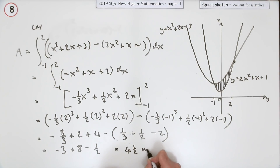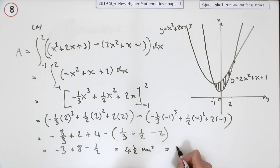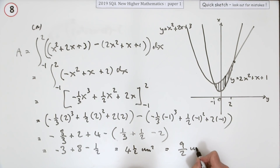Putting it all together, that's 5 minus a half, which is 4 and a half square units — or you could write that as 9 over 2 units squared.